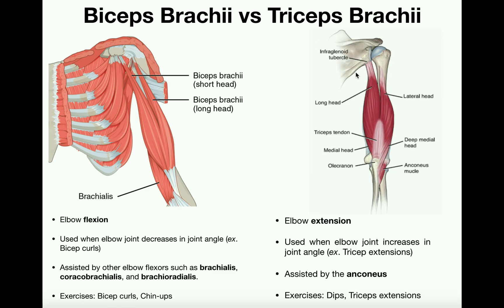Now let's switch gears and look at the triceps. While the biceps are the anterior muscle, the triceps lie more posteriorly on the posterior side of the humerus. The triceps are similar but are a three-headed muscle. They have a lateral head, a medial head, and a long head — probably the largest and most visible part of the triceps if you have low body fat or large triceps. All three heads fuse into one muscle and insert on the olecranon.